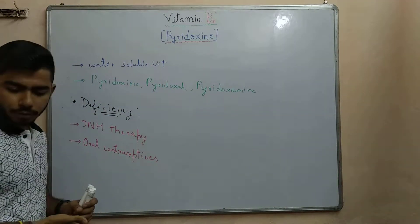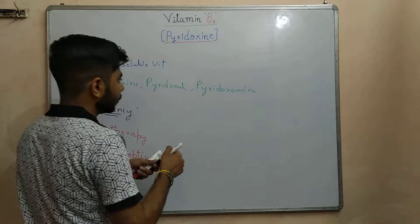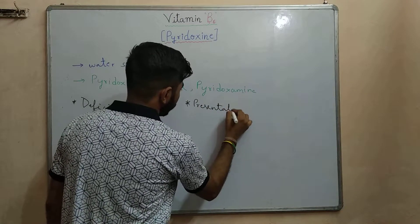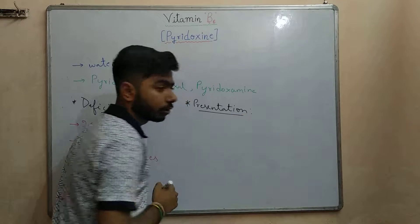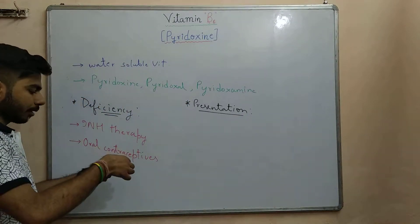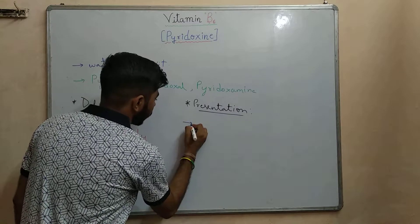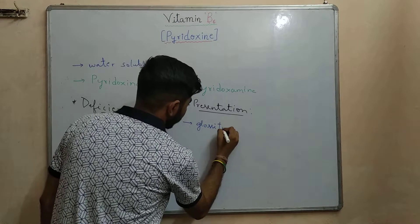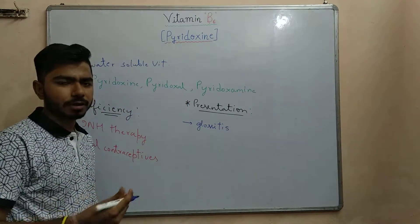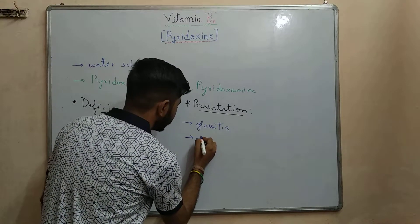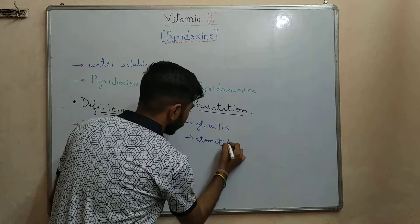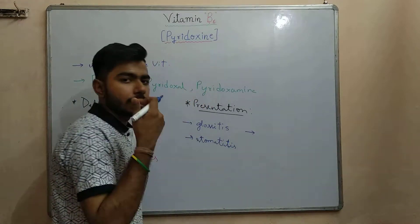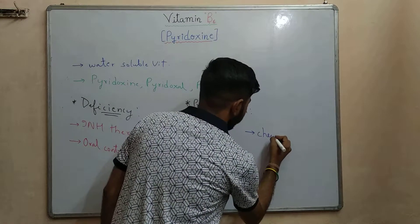So let's talk about the presentation — this is very important for MCQ-based exams. First, let's talk about the oral cavity. Glossitis can be seen, which is the inflammation of the tongue. Stomatitis can be seen, which is the inflammation of the mouth. There can also be lips involvement, so cheilosis can be seen.